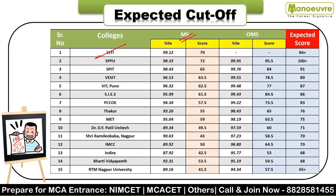VJTI is only for Maharashtra State candidates - there is no seat for OMS. The cut-off is 99.12 percentile, which means a score of 79. You should easily target 84 plus for VJTI. Thereafter, target SPPO, SPIT, VES IT, VIT, SIS, PCCoe, Thakur, MET, Dr. D.Y. Patel, Unitech, Shri Ramdeobaba Nagpur, MCC Pune, Indra Bharati, and RTM Nagpur University. Target 100 plus marks for SPPO. Good placement packages are available - I have made a video on that, check the description.